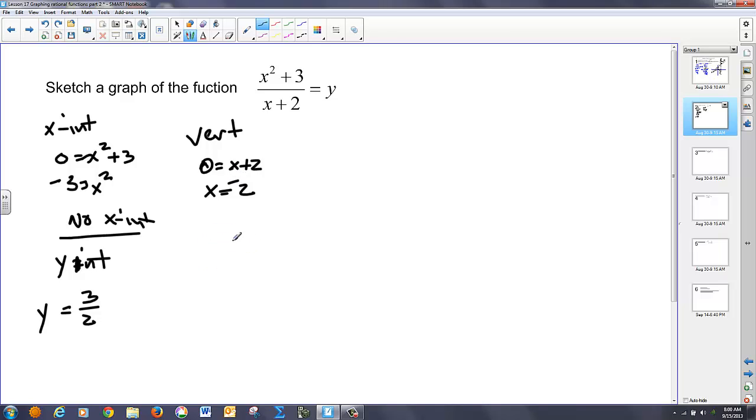Vertical asymptote, I get x equals negative two. Slant. We're going to have to do our long division, so I take x plus two, divide that into x squared plus three. Notice I'm leaving a placeholder for my zero x term. In fact, I'll just put zero x right here. x times what is x squared? That's an x. Put in my x squared plus two x. I'm going to subtract that out. We get negative two x plus three. x times what is negative two x? That's negative two. And as we stated before, that's all we really need for our slant.